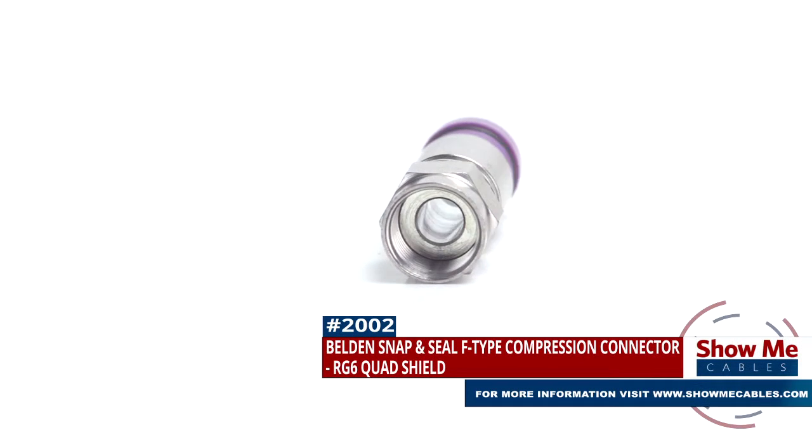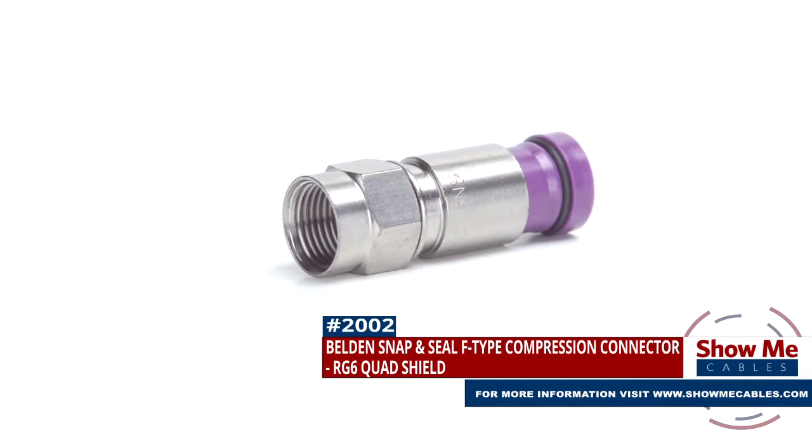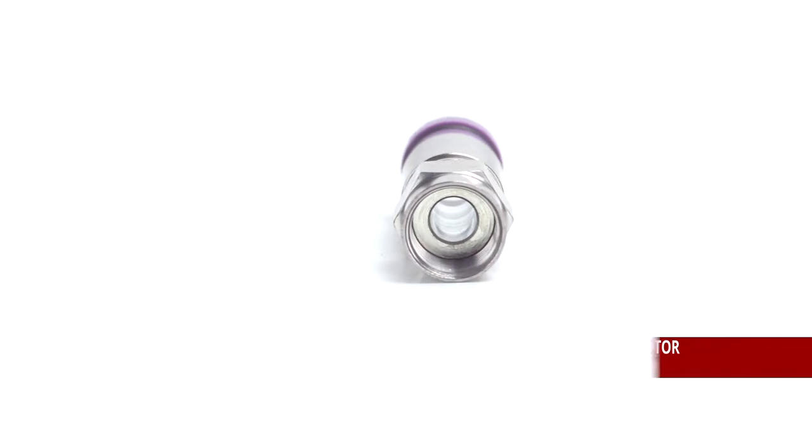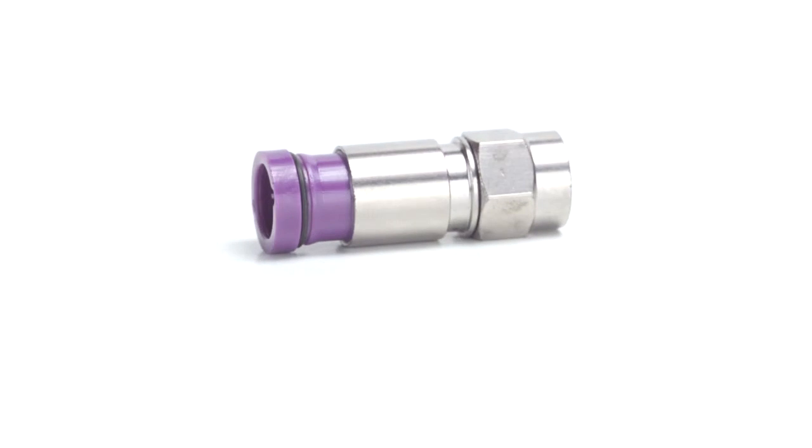Are you looking for a quick and easy DIY installation or repair for your coax cable? Our Belden Snap and Seal F-Type Compression Connector for RG6 Quad Shield will provide a simple solution for your wiring needs.